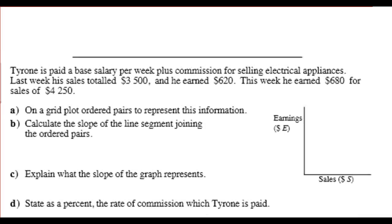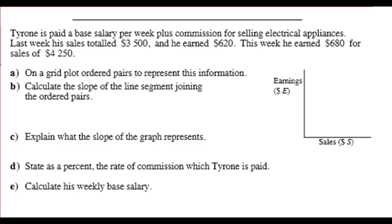It says here, Tyrone is paid a base salary per week plus commission for selling electrical appliances. Last week, his sales totaled $3,500 and he earned $620. This week, he earned $680 for sales of $4,250. On a grid, plot these ordered pairs. So, we have sales. Sales could be our, again, you want to have a good scale here. It goes up to $4,000. So, I want to make this up to $5,000. His earnings go to about $700 here. So, I might just do a rough sketch of sales, $700. And this here is going to be $5,000.